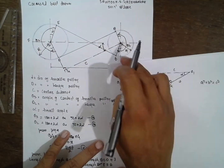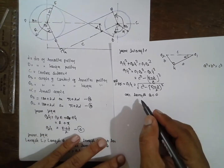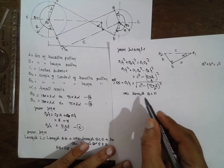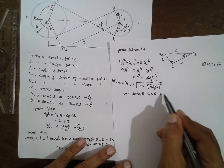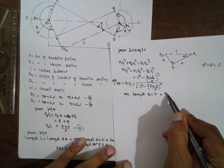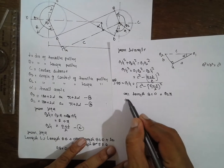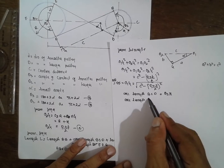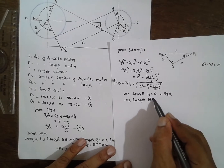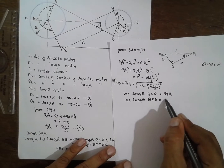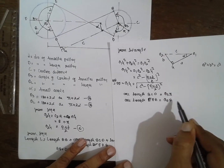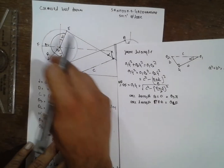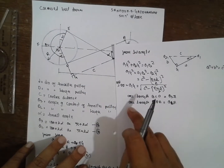The arc length for BCD is nothing but thetaS times small r. The arc length for EFA becomes thetaL times capital R. This is the arc length. Now everything has to be substituted into the length equation.